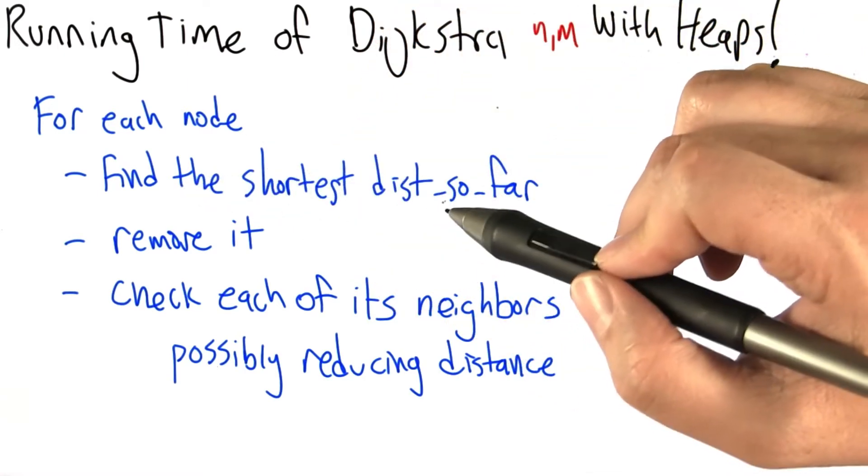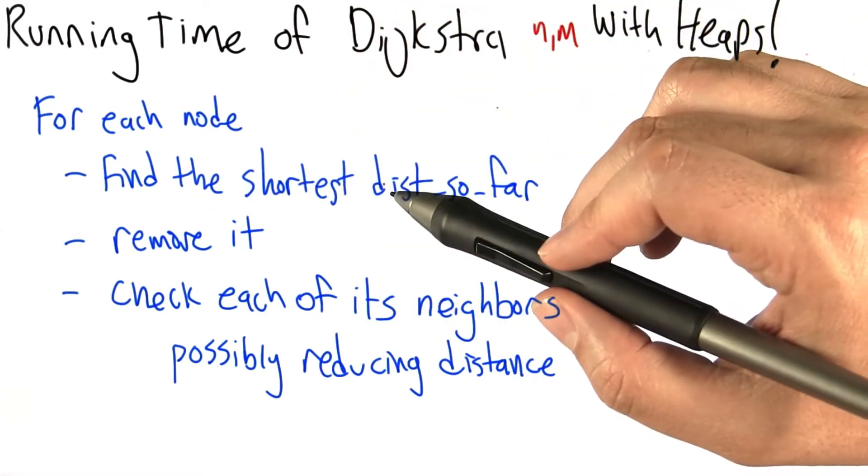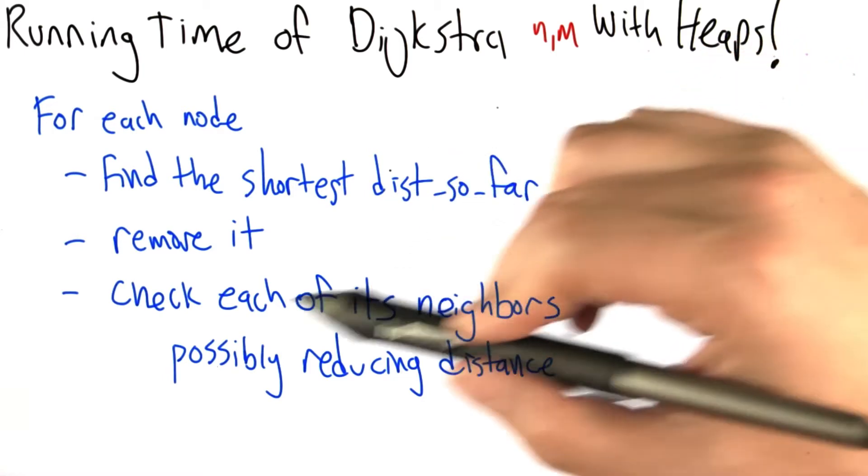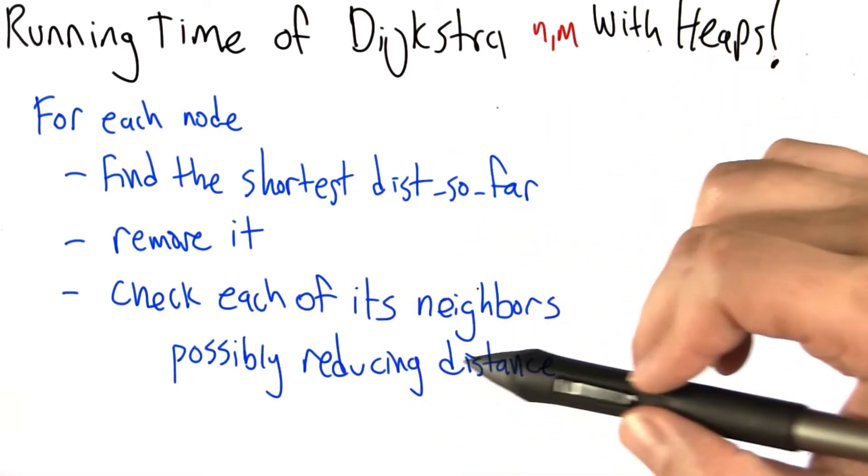So here's the sketch of the algorithm again. For each node, we find the shortest distance so far, remove it from the set because that one's now done, we actually know the distance to that node.